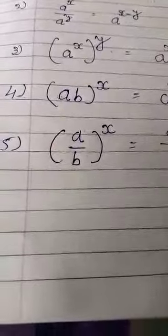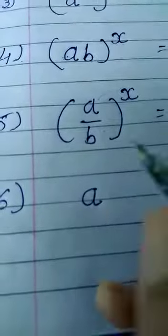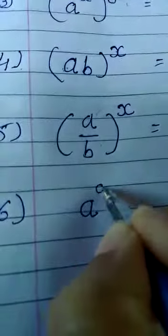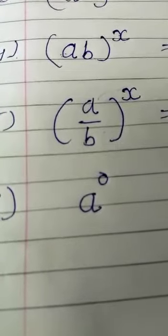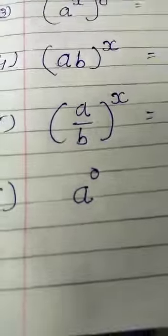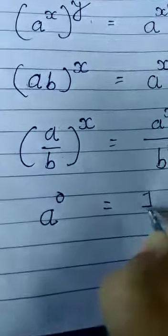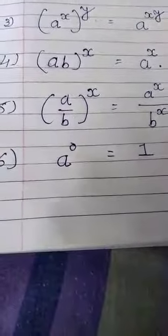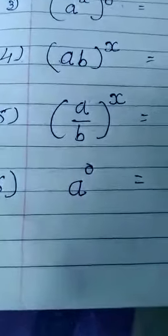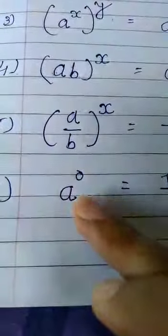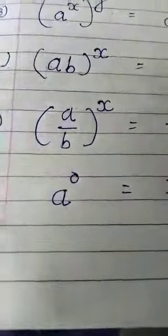The sixth rule is very easy: any number raised to the power zero equals one. It doesn't matter if it's a thousand, a million, or ten million — any number with a power of zero gives the answer one. Please remember: a to the power zero equals one.